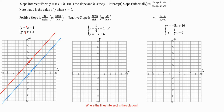Now we're going to graph y equals 1/4 x plus 1. We put a dot at the y-intercept at positive 1, then go up 1 and right 4 because our slope is 1/4. From the first dot, we go up 1 and right 4 to get a second dot, and we can do that one more time to get a third dot at the point (8, 3). Then we draw a straight line through them.